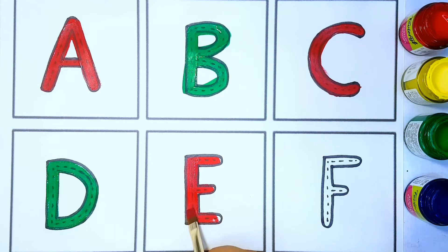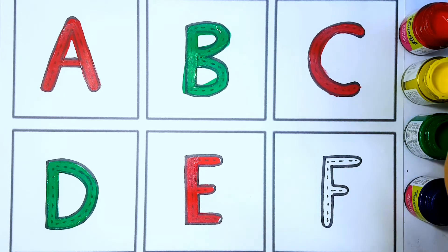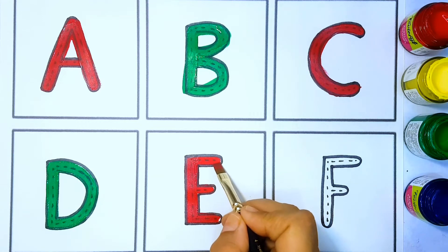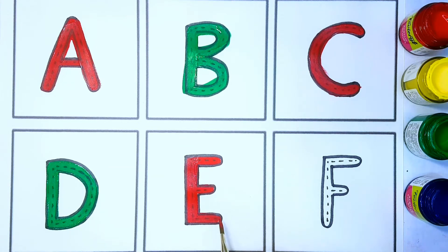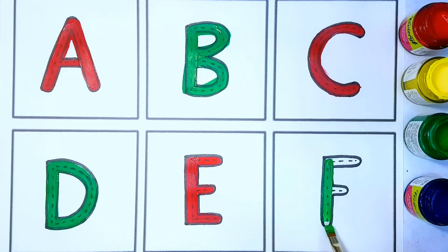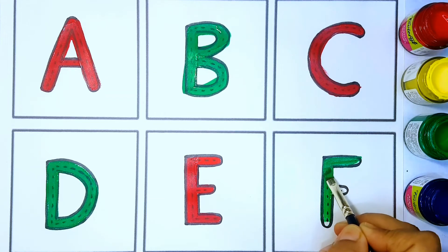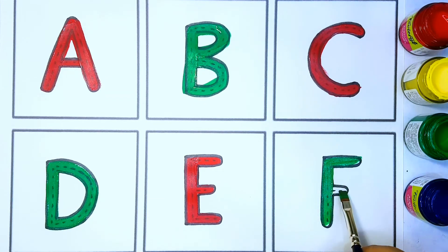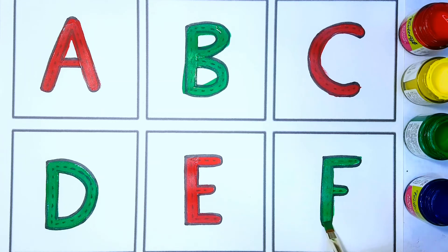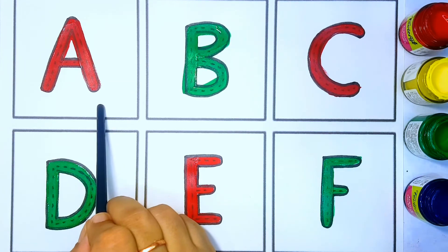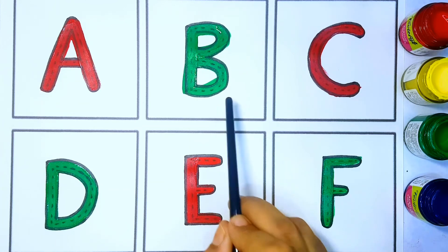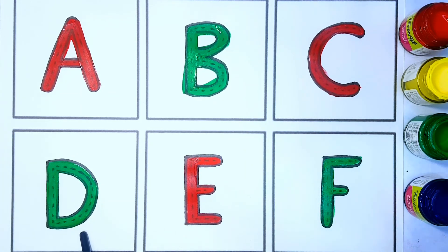D for Elephant. E for Elephant. F. F for Fish. A B C D E F.